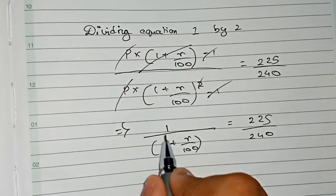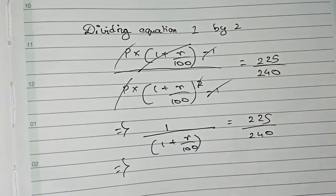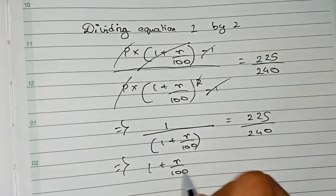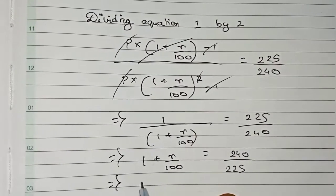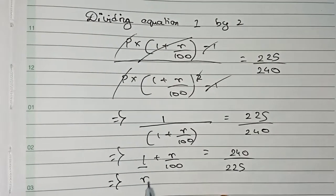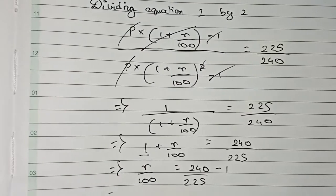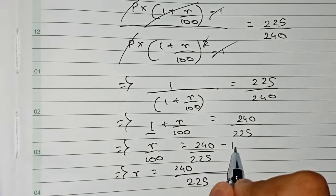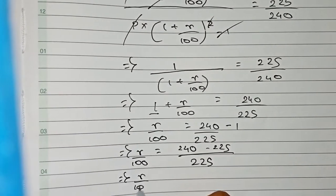Taking the reciprocal of both sides: 1 + r/100 = 240/225. Moving 1 to the other side: r/100 = 240/225 − 1, which equals (240 − 225)/225 = 15/225.